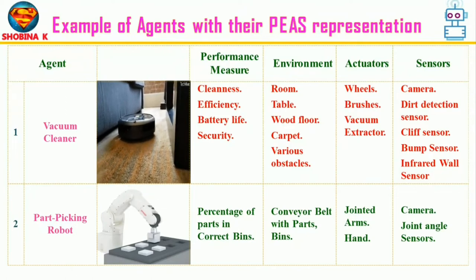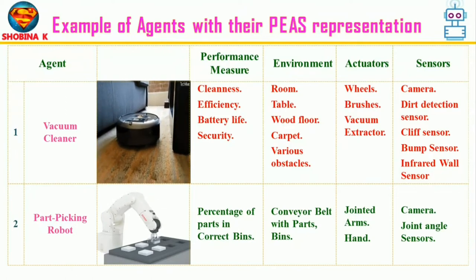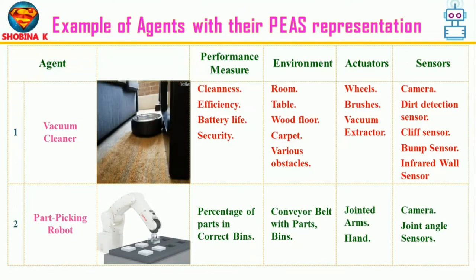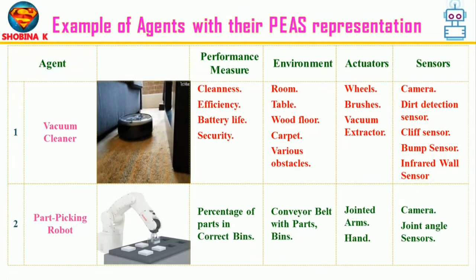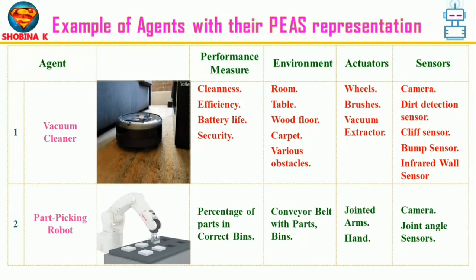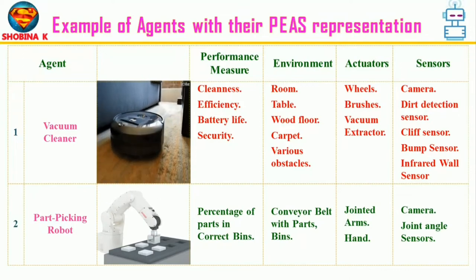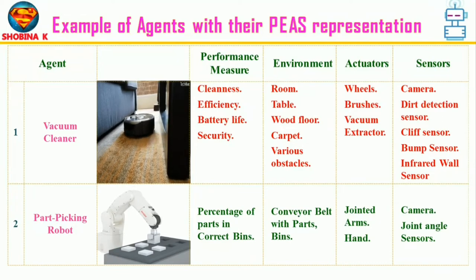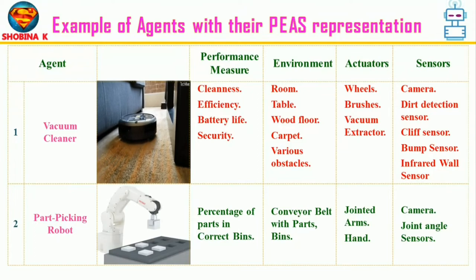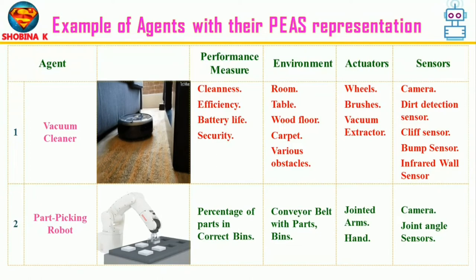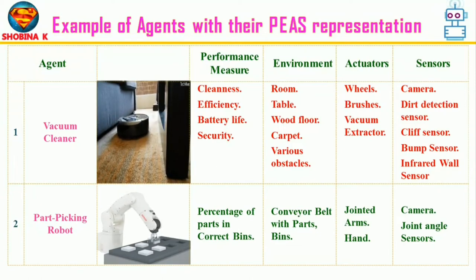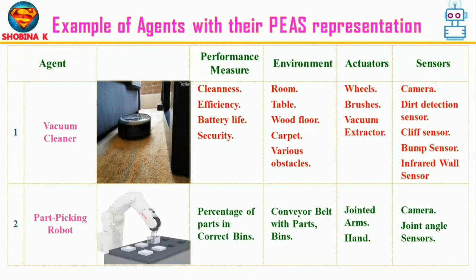A part-picking robot picks up parts or tools and places them in a new location. Its performance measure is the number of correct parts placed in a bin. The environment consists of conveyor belts with parts and bins. Actuators cause the robot to move — often using motors to turn wheels or rotate robot arm joints. Sensors could be cameras or joint angle sensors.